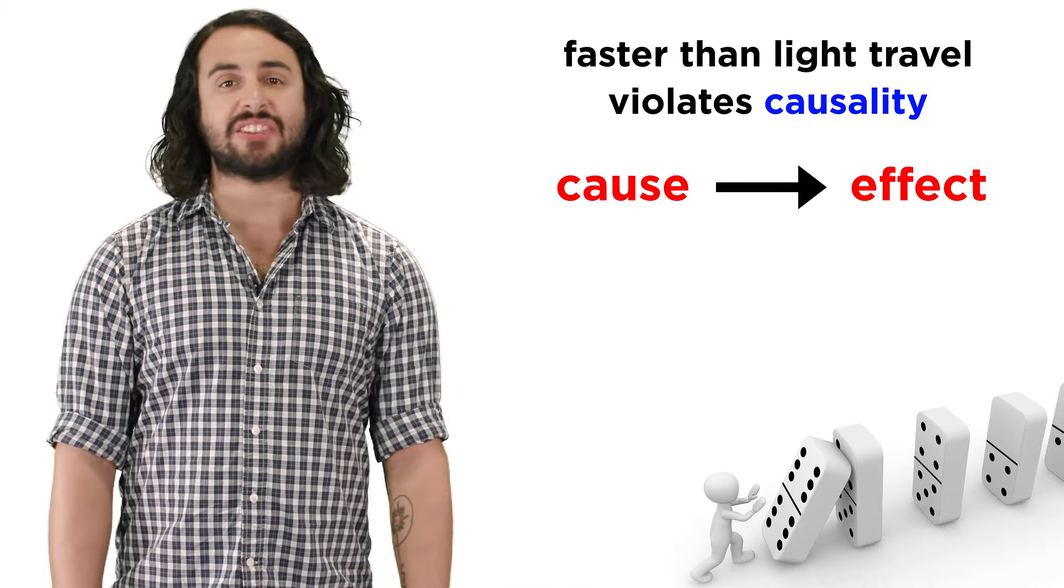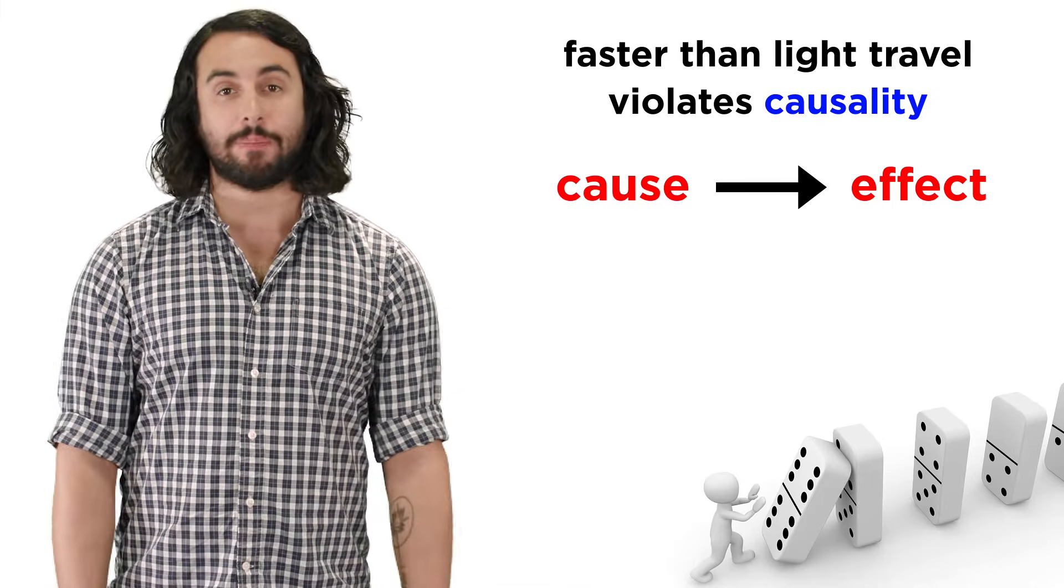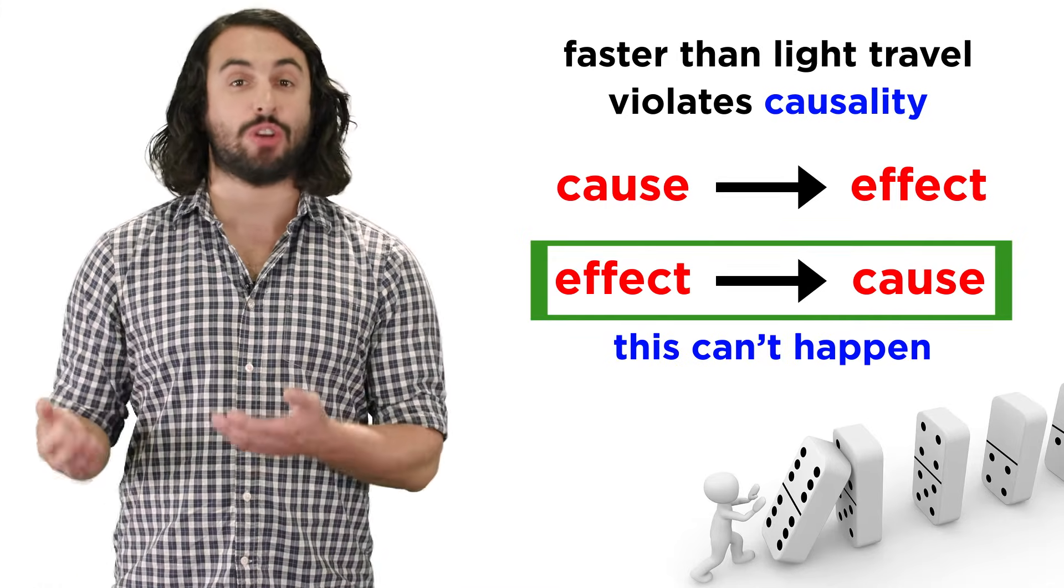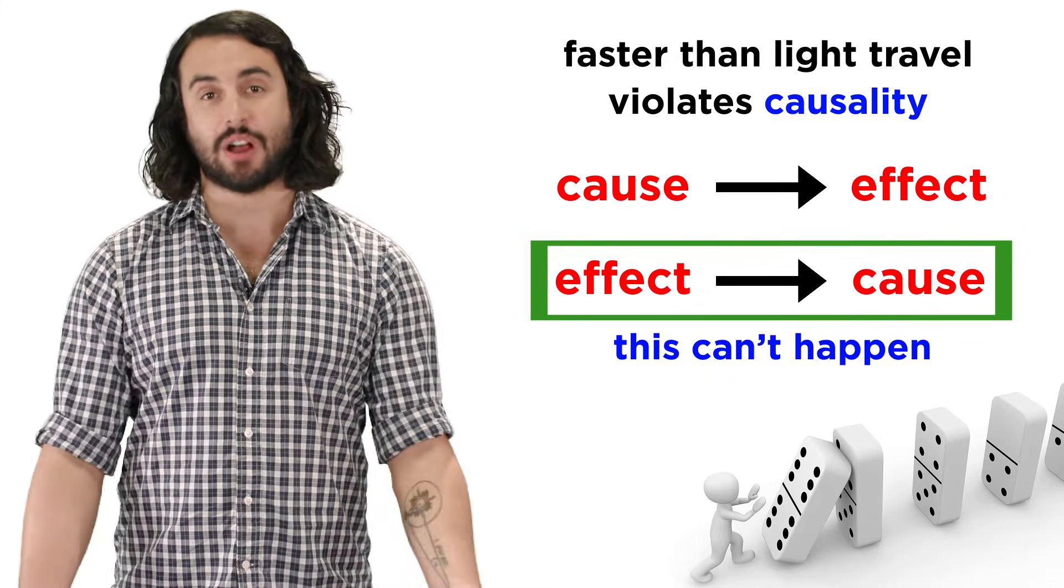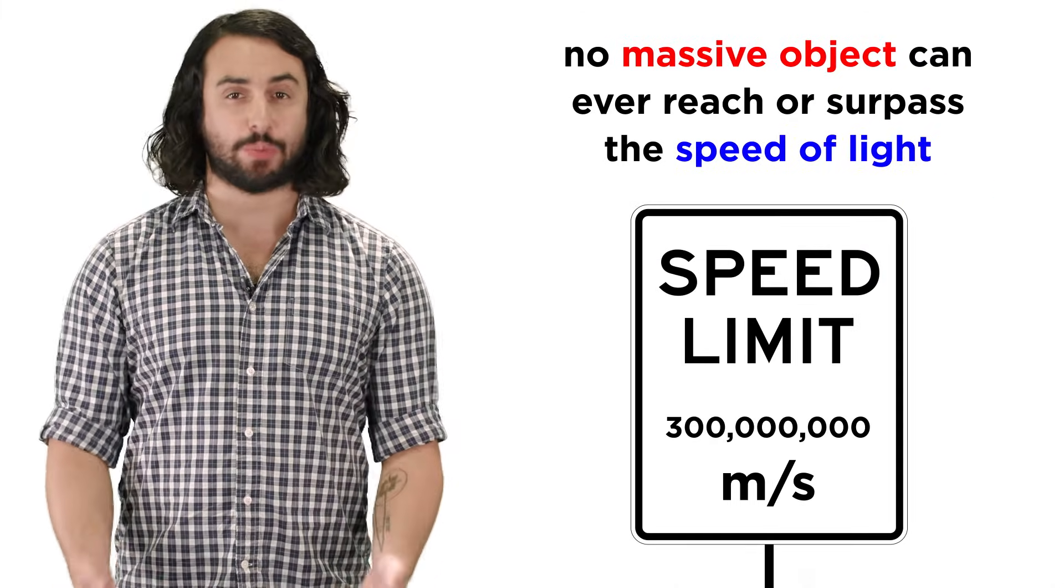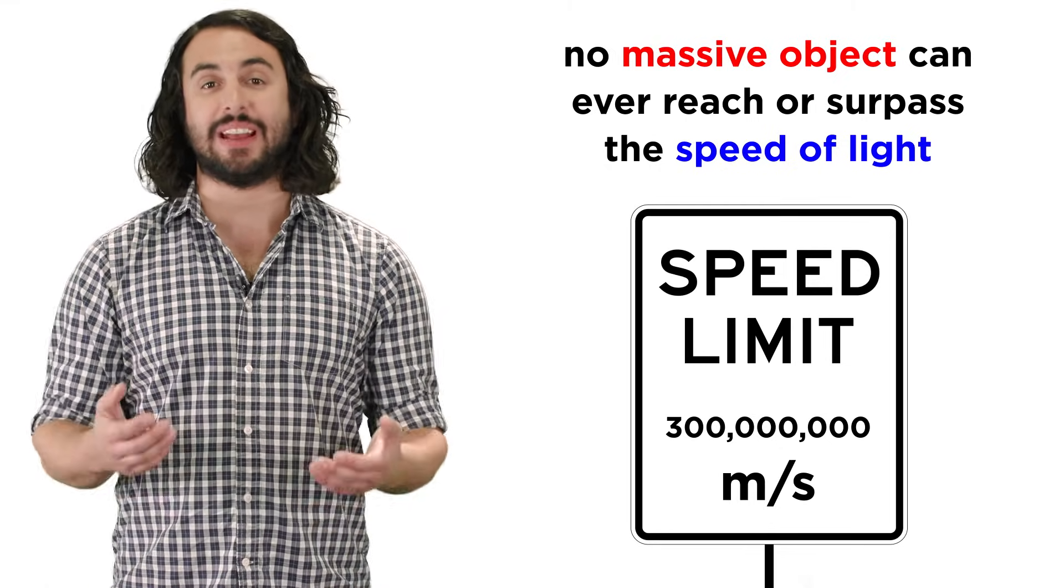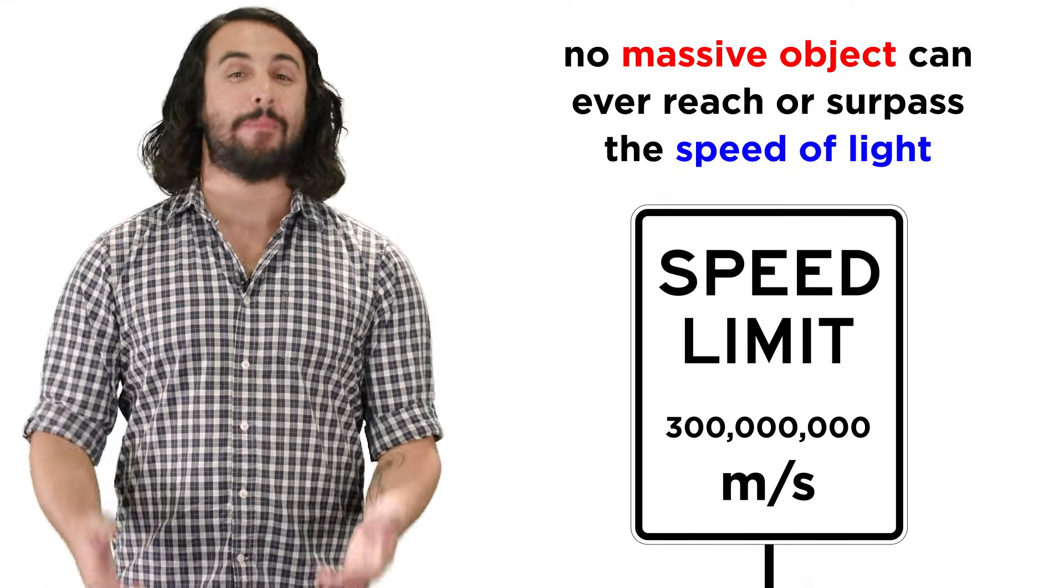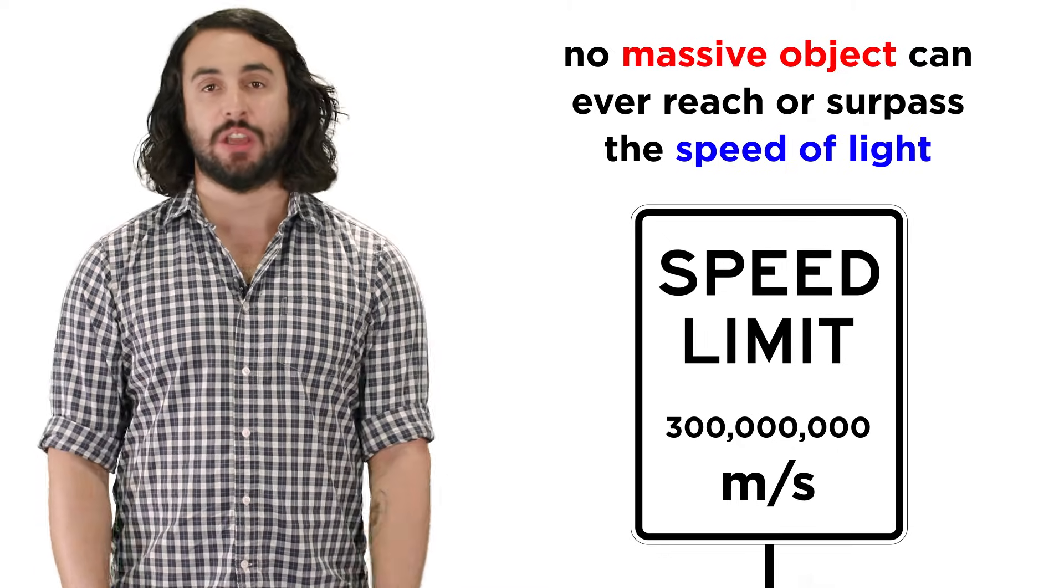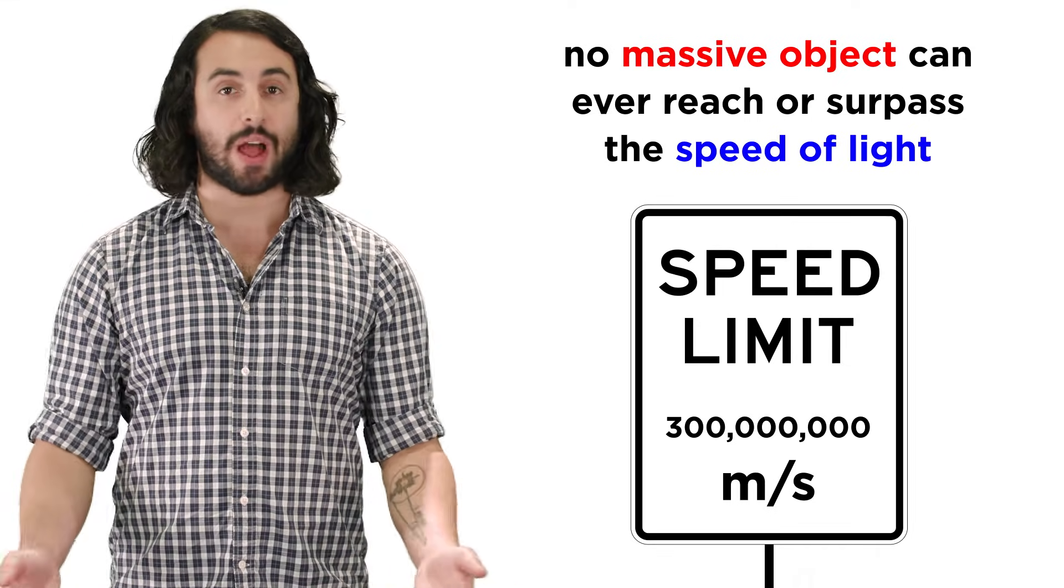Beyond this, faster-than-light travel implies problems with simultaneity whereby an effect could happen before its own cause, which violates causality. So we must accept that for all these reasons, the speed of light absolutely can never be attained or surpassed by any massive object, for reasons that are fundamental not just to physics, but to mathematics and logic as well.